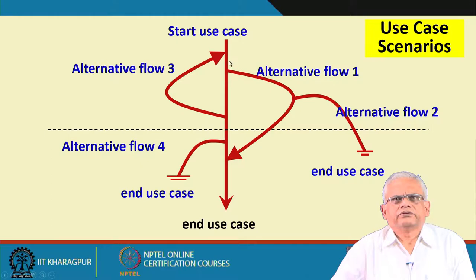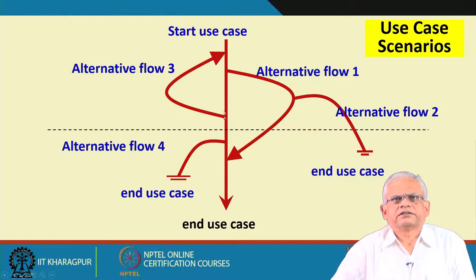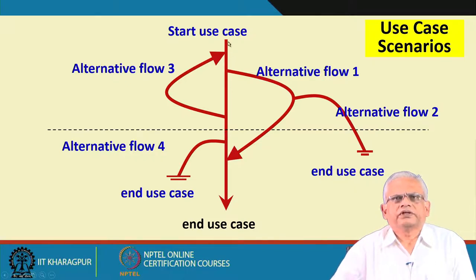But sometimes you insert the ATM card, enter the password, it asks for the amount, you enter 550 rupees, and it says please enter an amount in multiples of 500. So you have to re-enter. That is one alternate scenario. In another scenario, after you enter the amount it says insufficient balance and ends the use case — it ejects the card. So for every use case we need to identify the mainline scenario that typically occurs and the alternate scenarios.